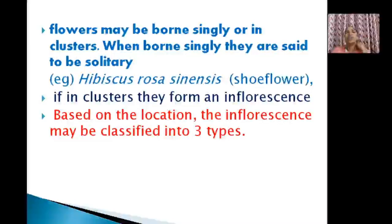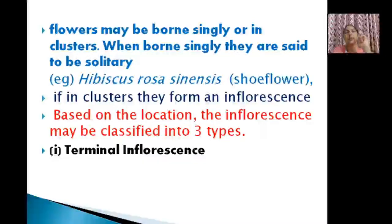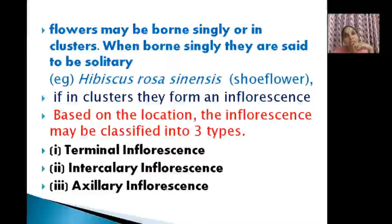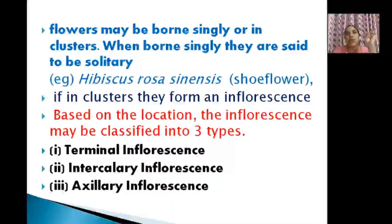Based on location, inflorescence may be classified into three types. First is terminal inflorescence — occurring at the tip of branches. Second is intercalary inflorescence — occurring at the middle portions, in between the axis and nodes. Third is axillary inflorescence — occurring at the axil of the leaf or stem.